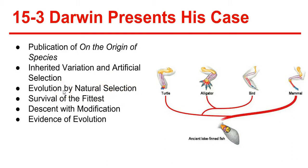Next, evolution by natural selection — Darwin's greatest contribution. This centered around the struggle for existence. Darwin realized that high birth rates and a shortage of life's basic needs would eventually force organisms into competition for resources. The struggle for existence means members of each species compete to obtain food, living space, and other necessities of life. Predators that are faster or have a particular way of ensnaring other organisms can catch more prey, while prey that are faster, better camouflaged, or better protected can avoid being caught — those are the ones that survive and reproduce. Darwin called this the survival of the fittest. A key factor was how well-suited an organism is to its environment. Fitness is defined as the ability of an individual to survive and reproduce in its specific environment, and Darwin proposed that fitness is a result of adaptations. An adaptation is any inherited characteristic that increases an organism's chance of survival.